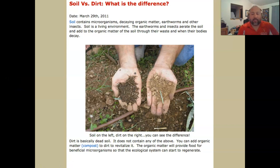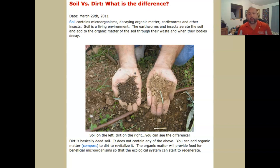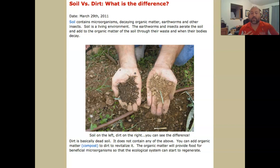I like to talk about soil rather than dirt, because soil and dirt are not the same thing. Soil contains microorganisms, organic matter, earthworms, insects, microbes, and all sorts of other organisms. Soil is a living environment — it's an ecosystem. Whereas dirt is dead soil. You can turn dirt back into soil by adding water and organic matter. People use the terms interchangeably, but they are different: soil is a living environment, dirt is dead soil.